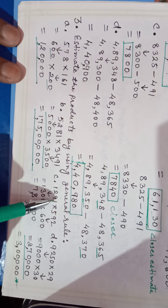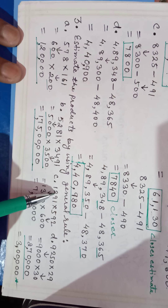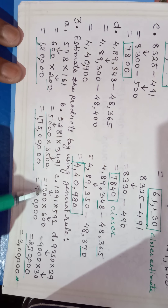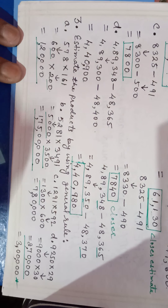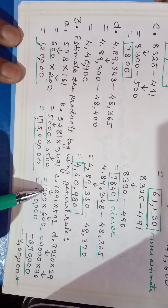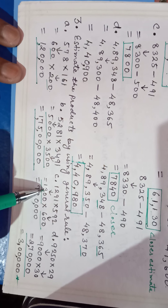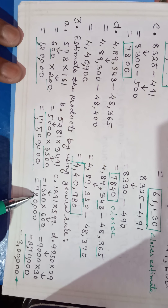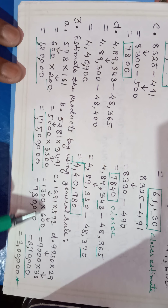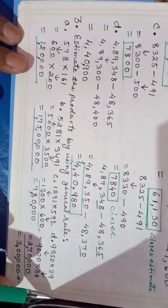Question: 1,291 into 592. 1,292 is nearer to 1,300 and 592 is rounded as 600. So 1,300 into 600: we get 13 times 6 equals 78, followed by four zeros, giving 7,80,000. This is the answer.